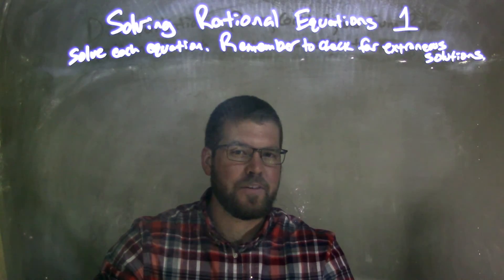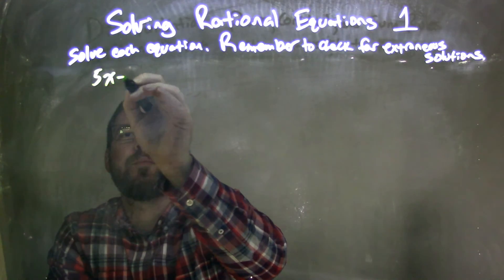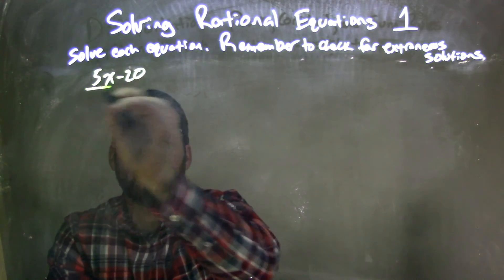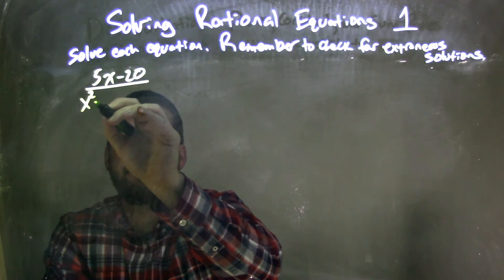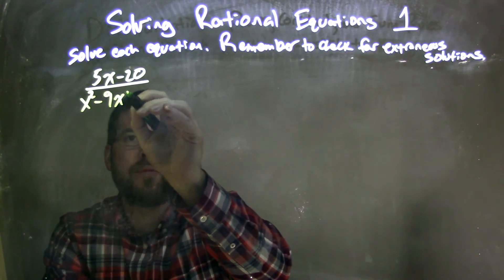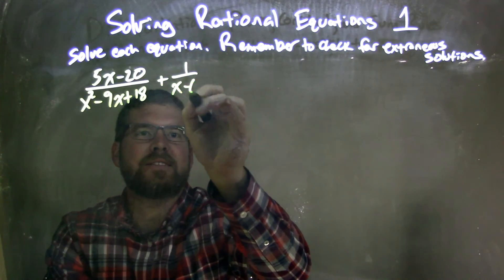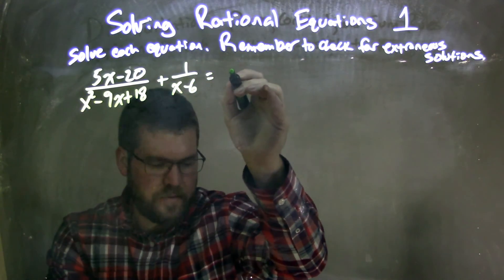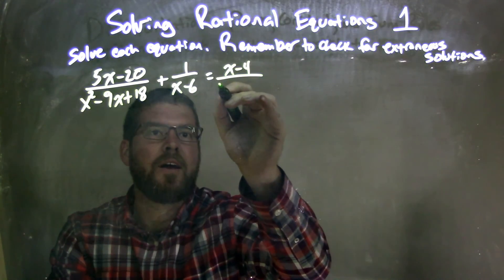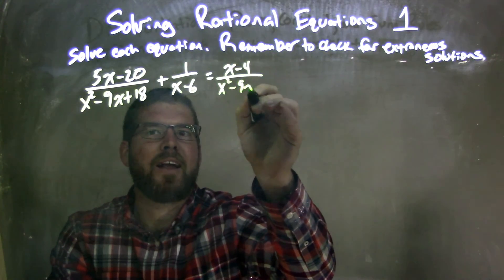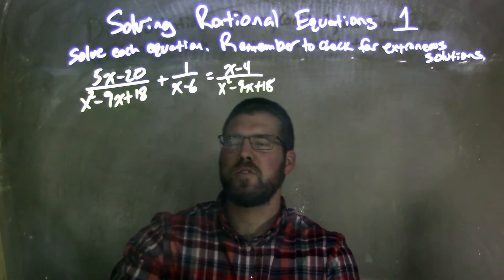So if I was given this doozy of a problem here: 5x minus 20 over x squared minus 9x plus 18, plus 1 over x minus 6, equals x minus 4 over x squared minus 9x plus 18. Okay, it's a doozy of a problem.